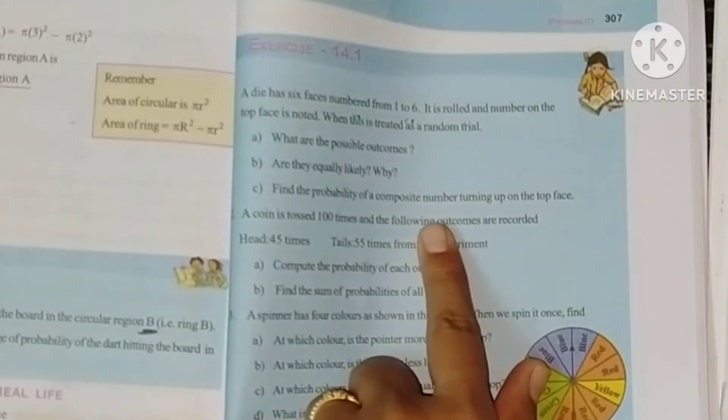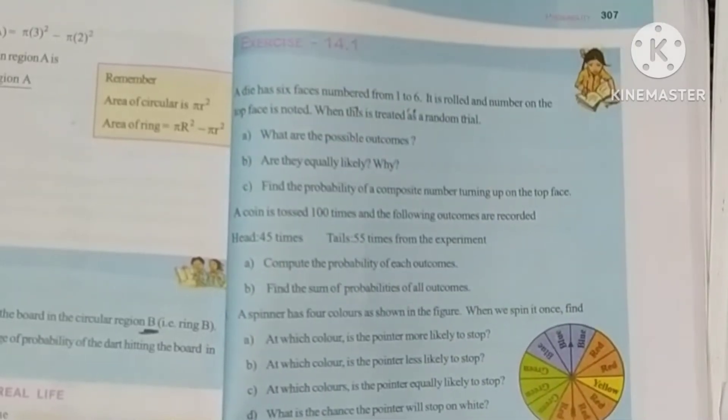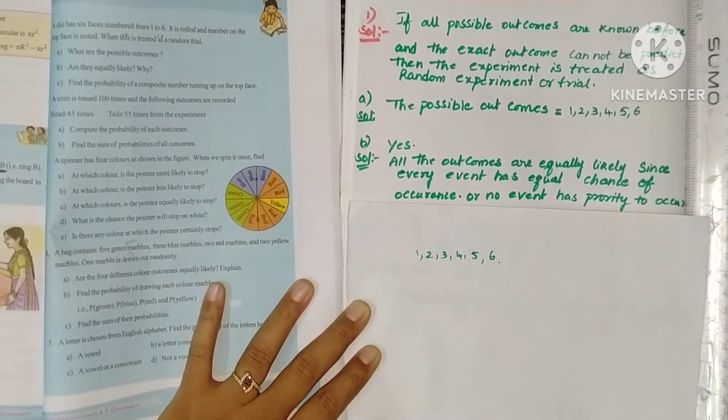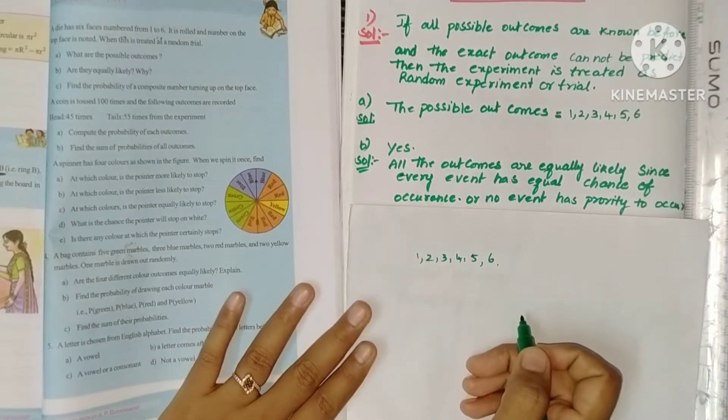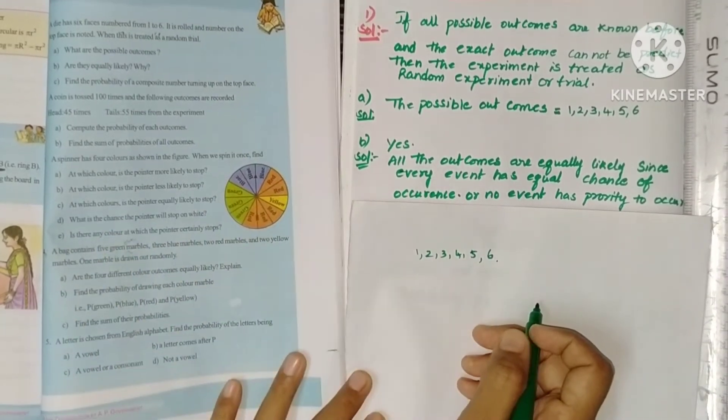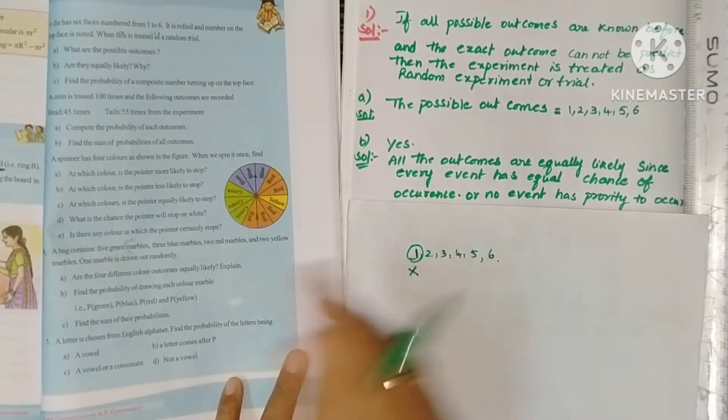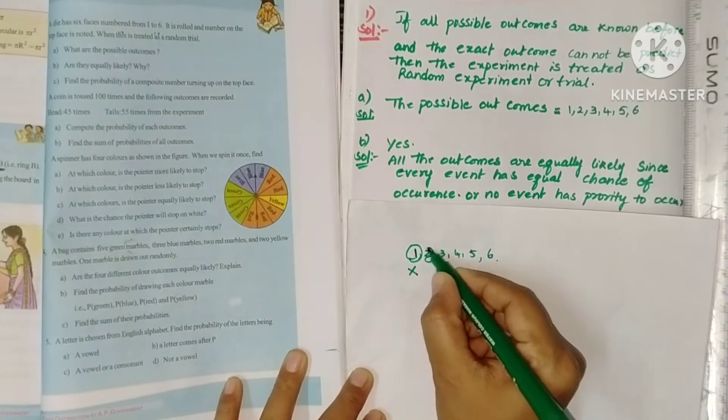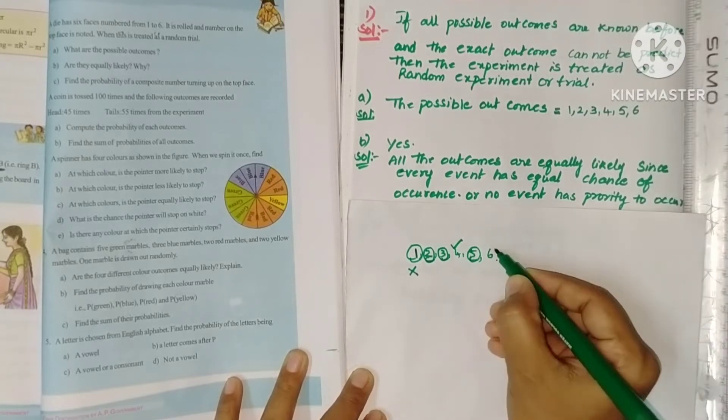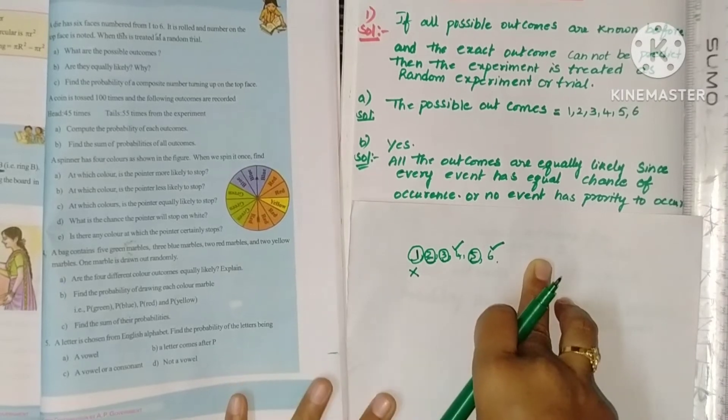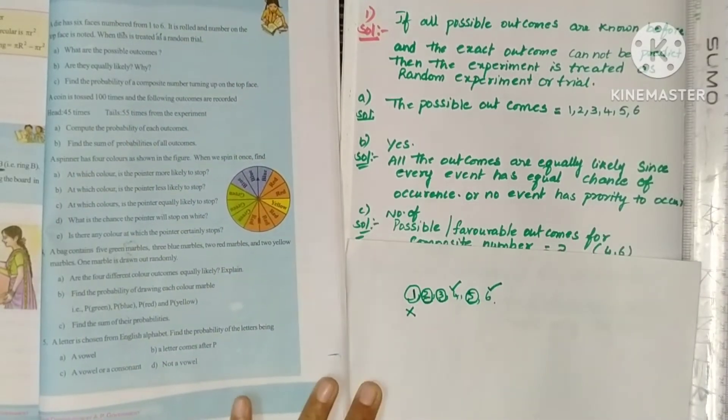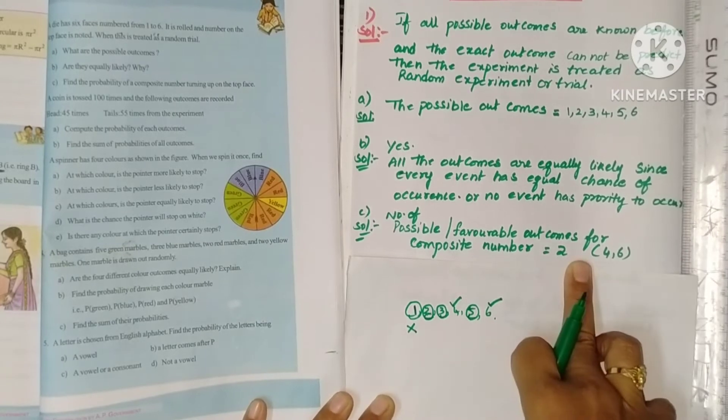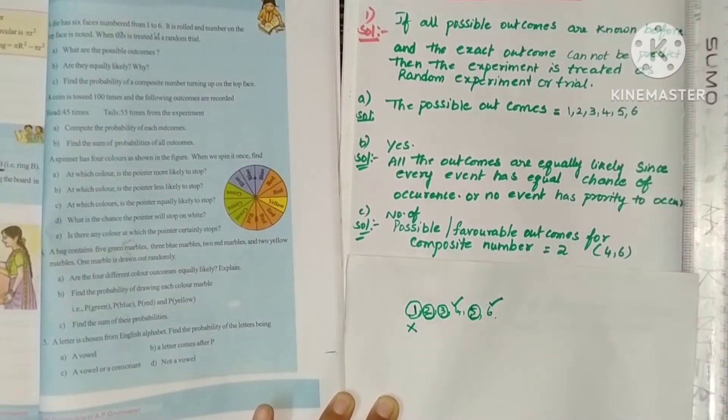Find the probability of a composite number turning up on the top face. So we know the total outcomes are 1, 2, 3, 4, 5, 6. Now composite numbers - composite numbers are those that are not prime numbers. And most importantly, 1 is neither prime nor composite. 1 is not a prime number, not a composite number. So the prime numbers are 2, 3, 5. So the composite numbers will be 4 and 6. We have to find the probability.